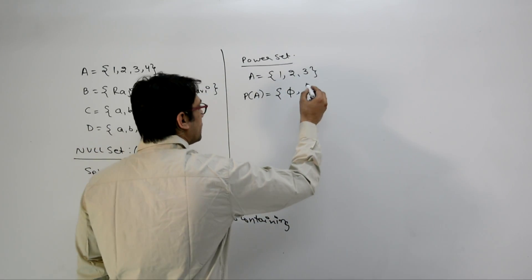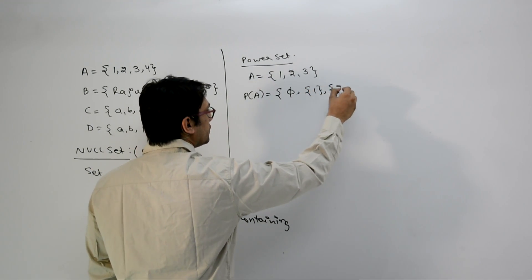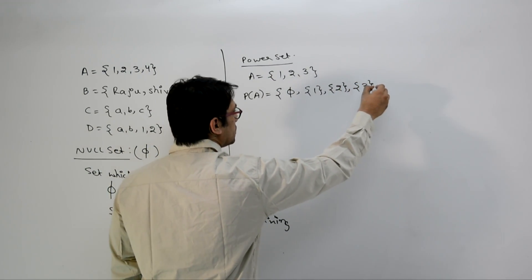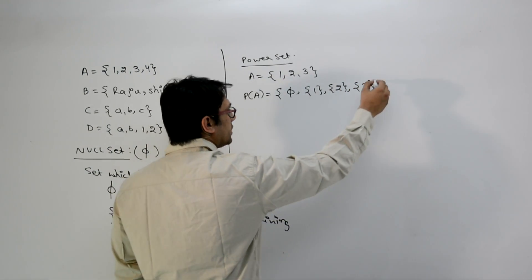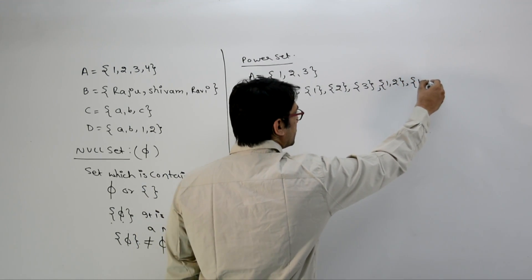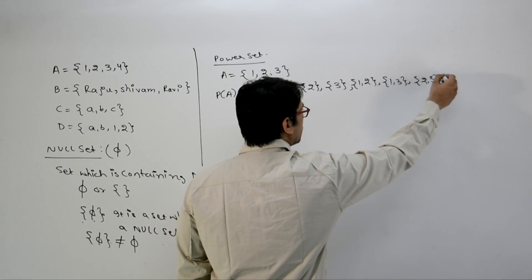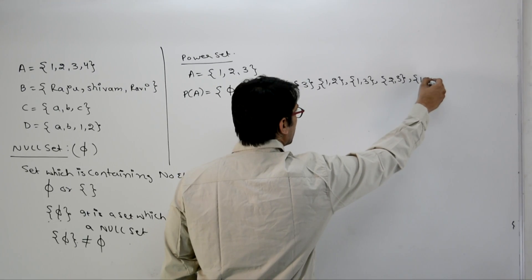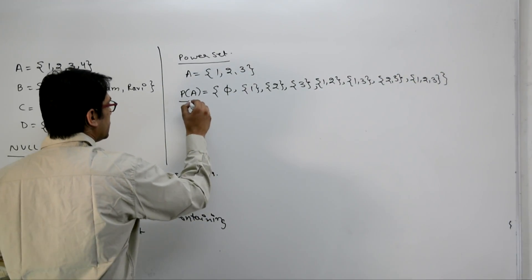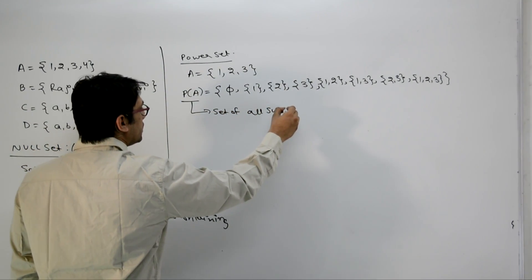We can also have subsets with a single element, subsets with two elements, or the full set {1, 2, 3}. So the subsets are: {1}, {2}, {3}, {1,2}, {1,3}, {2,3}, and {1,2,3}. The power set is the set of all these subsets.